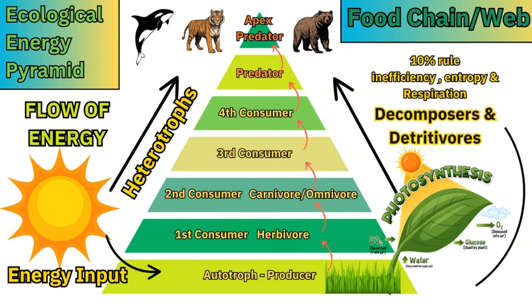The energy pyramid is a great shape to demonstrate the transfer and movement of energy. Once an autotroph has absorbed the energy and used it to create its own food, that energy stored in the grass or biomass becomes available for other species — various animal fauna that are called first consumers or herbivores.